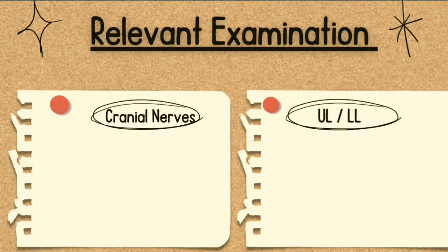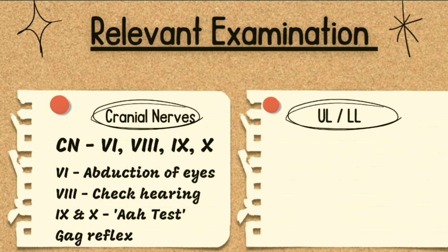Coming towards the relevant examination of the facial nerve, it is divided into two parts: cranial nerve examination and upper and lower limb examination. The relevant cranial nerves are the 6th, 8th, 9th, and 10th — that is the abducent, vestibulocochlear, glossopharyngeal, and vagus nerves. For the 6th cranial nerve, make an H movement to examine extraocular muscles; if involved, the patient cannot abduct one eye. For the 8th cranial nerve, check hearing in each ear by occluding one ear and rubbing fingers together near the opposite ear.